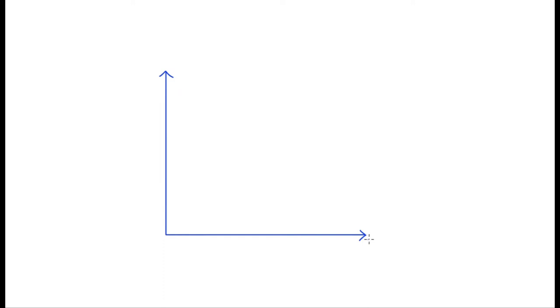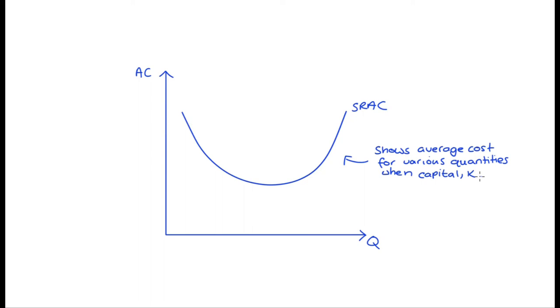It's also important to think about what our average cost curves are doing. We have two axes: on the horizontal axis we have quantity, and on the vertical axis we have a measure of average costs. Our short-run cost curves show the average costs for various quantities when capital is fixed at some amount — that's what makes them short-run cost curves. A short-run average cost curve will typically be U-shaped, and each one corresponds to some fixed level of capital.